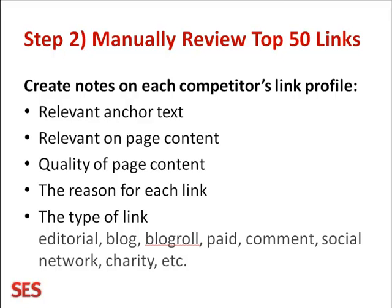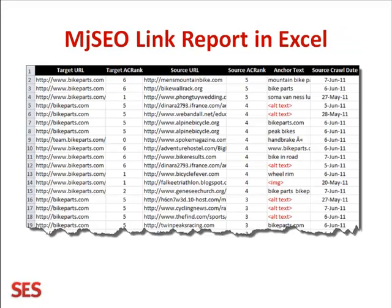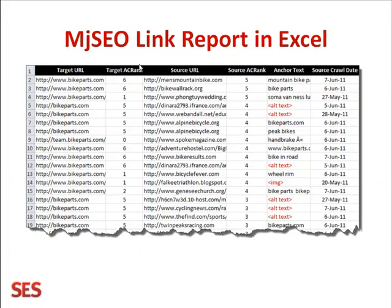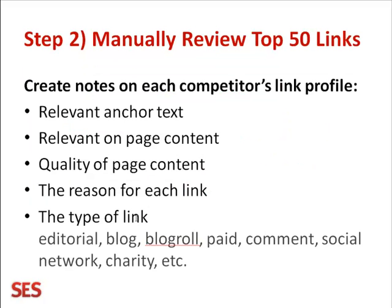Once you've done that, you want to review the top 50 links. In Majestic SEO, the reports show you AC rank — that's like a page rank of sorts, still a handy tool for sorting out the best sites to first research. Sort them by AC rank and read through the first 50, click on them and check them out. When you do that, take notes. Look and find out whether the links your competitors are getting have relevant anchor text, relevant page content, high quality pages, and a reason for the links they're getting.